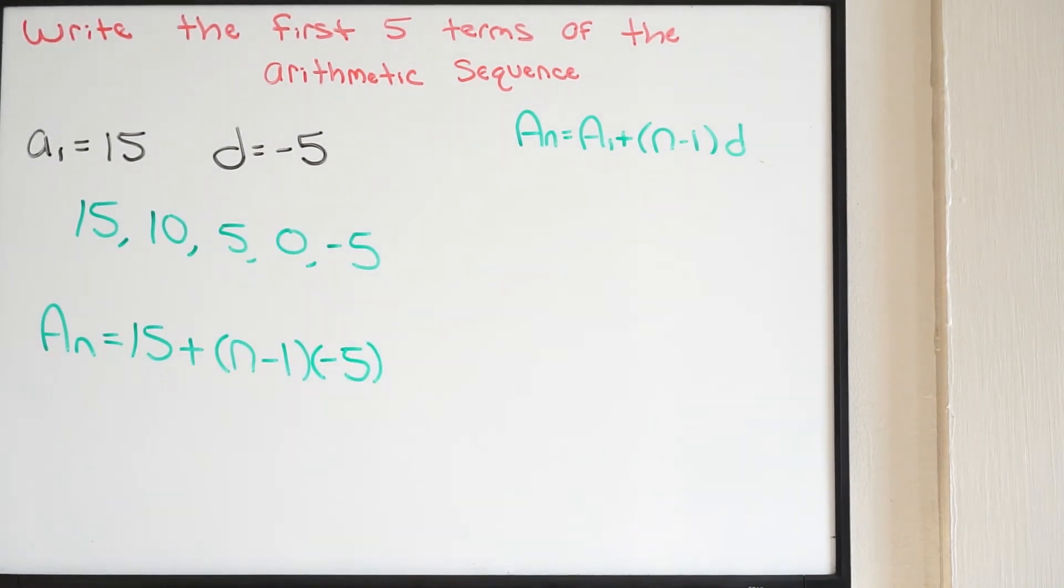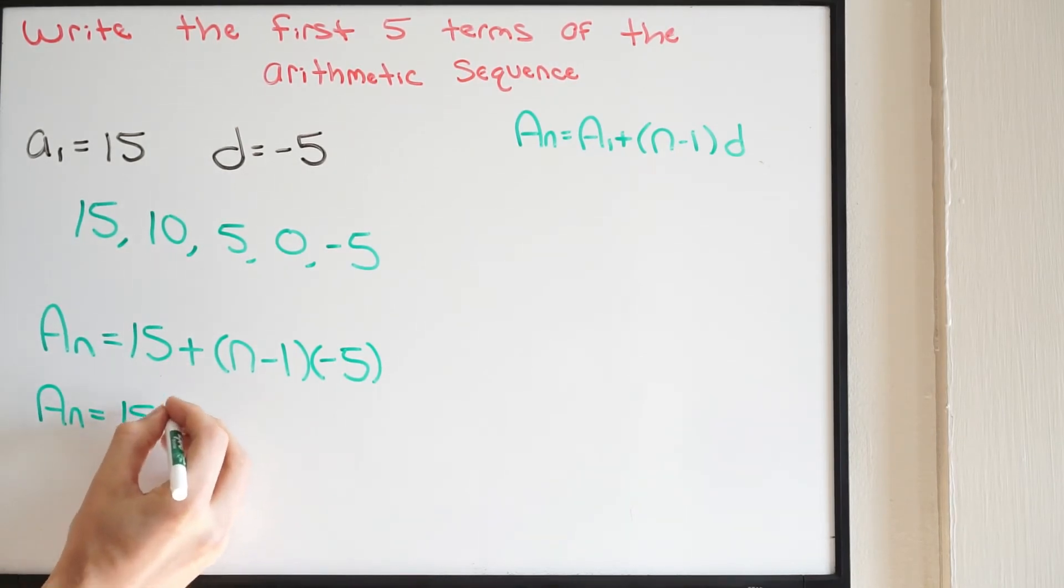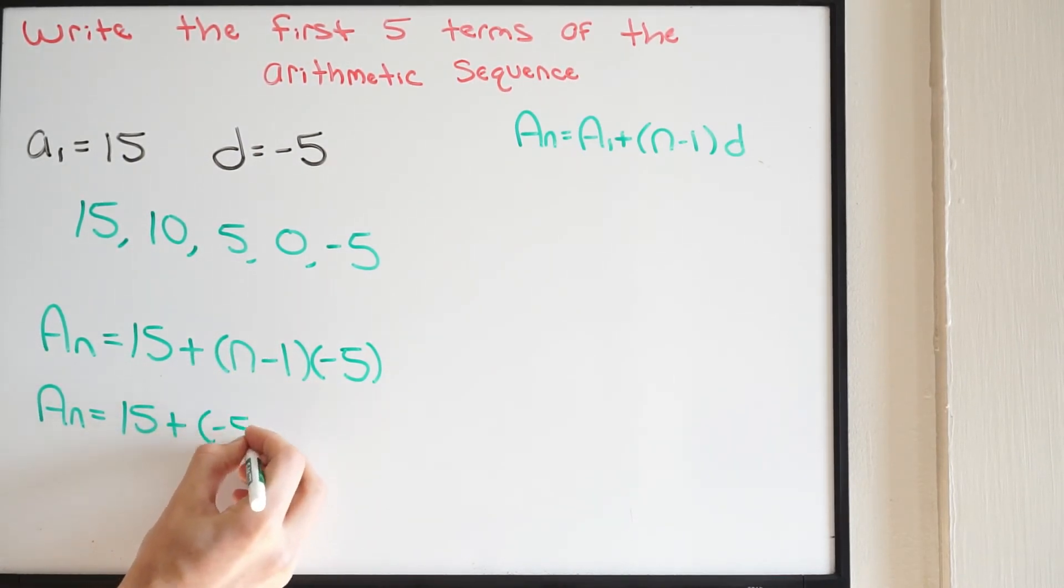Let's go ahead and just simplify this down. So we get A of N equal to 15, and we get plus. So we're going to go ahead and distribute in here. We're going to get a negative 5N,